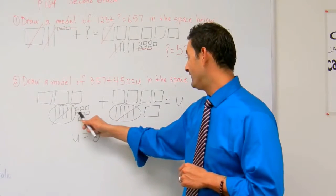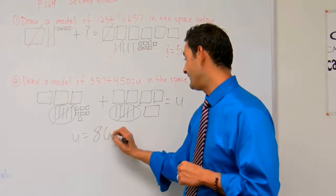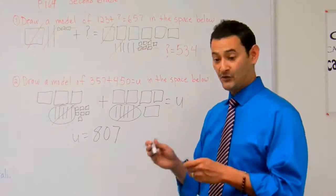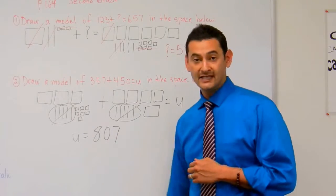800, and then one, two, three, four, five, six, seven. So we have 807. So U is going to equal 807.